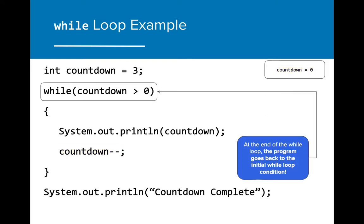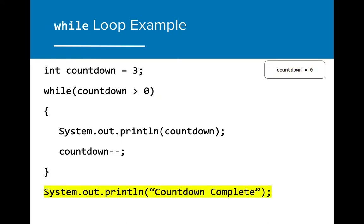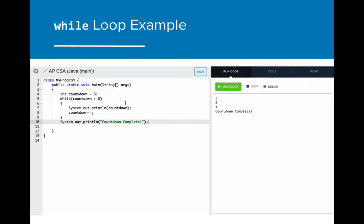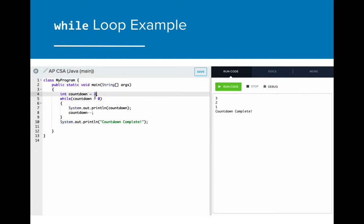The while loop then returns to the beginning to test the condition again. This time, however, the condition within the while loop evaluates to false. As a result, the while loop is not executed. Since the while loop condition is false, the next line of code that executes is the final print statement that follows the while loop. It's important to note that this doesn't get called at all until the while loop condition is false. Here is an example of this program live. Notice that we can change the value of countdown and the while loop will adjust accordingly. We don't have to write any additional code for this to work with countdown equals 3 or countdown equals 10, because the loop repeats itself until the value of countdown is zero in either case.